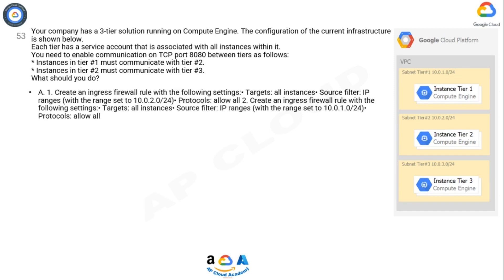Option A: 1. Create an ingress firewall rule with the following settings — Targets: all instances; Source filter: IP ranges, with the range set to 10.0.2.0/24; Protocols: allow all. 2. Create an ingress firewall rule with the following settings — Targets: all instances; Source filter: IP ranges, with the range set to 10.0.1.0/24; Protocols: allow all.